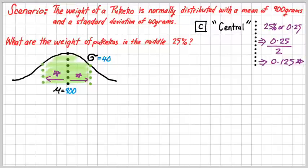That 0.125 is actually half of the shaded area. Two halves make a whole. And we are looking for that value there. So let's do that first. Let's find our z value.